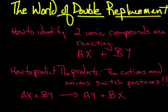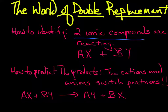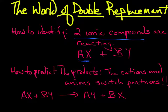We are going to be talking about the world of double replacement — a very common type of reaction that usually takes place in water. To identify it, I look for two ionic compounds. Ionic compounds have a cation and an anion reacting together. Here, A is your cation, B is an anion, X is a cation, and Y is an anion.